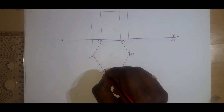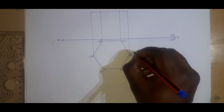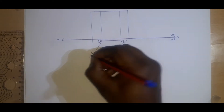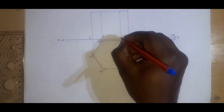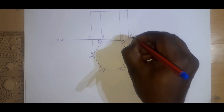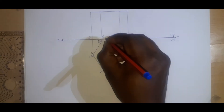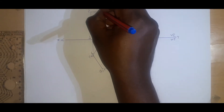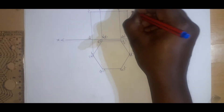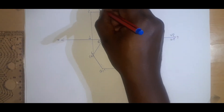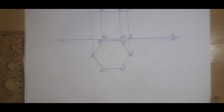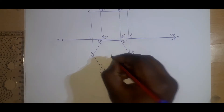The top face will be 1, 2, 3, 4, 5, 6. And here I name the top base vertices as A dash, B dash, C dash, D dash, E dash, F dash, and the top corners as 1 dash, 2 dash, 3 dash, 4 dash, 5 dash, 6 dash. So these are our points.